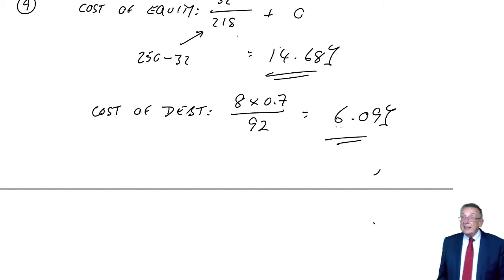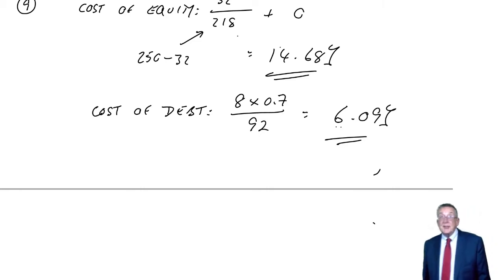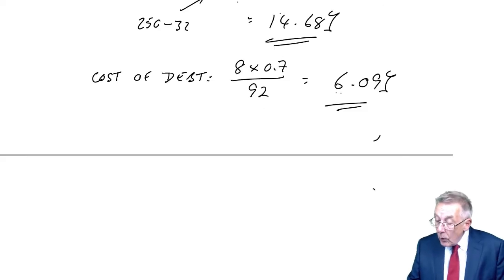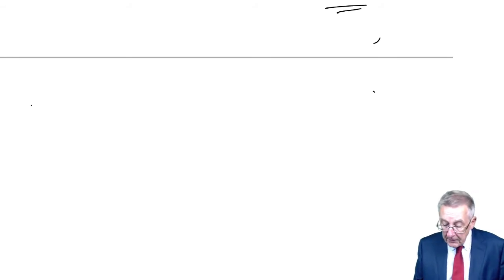It then says, what's the weighted average cost? Well, it means what it says, we'll take an average of the two, but we weight them by the total market values.